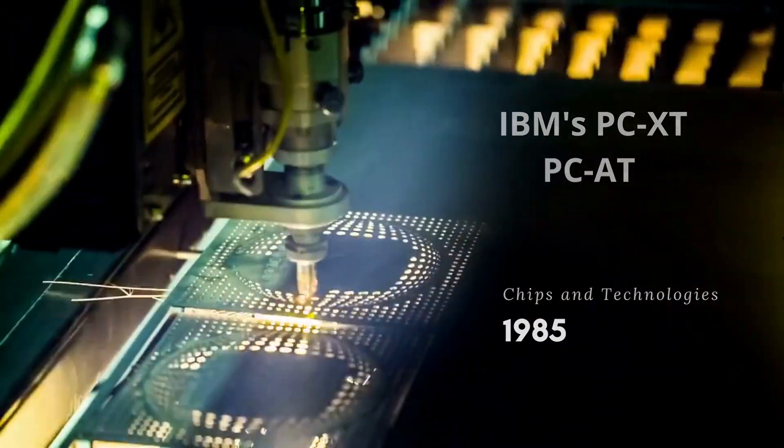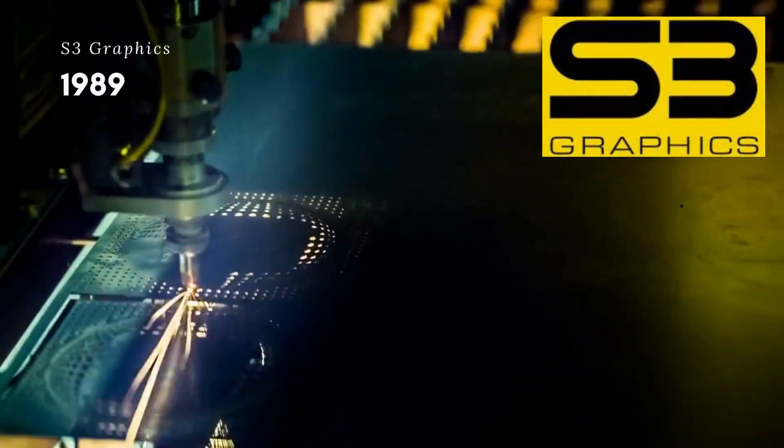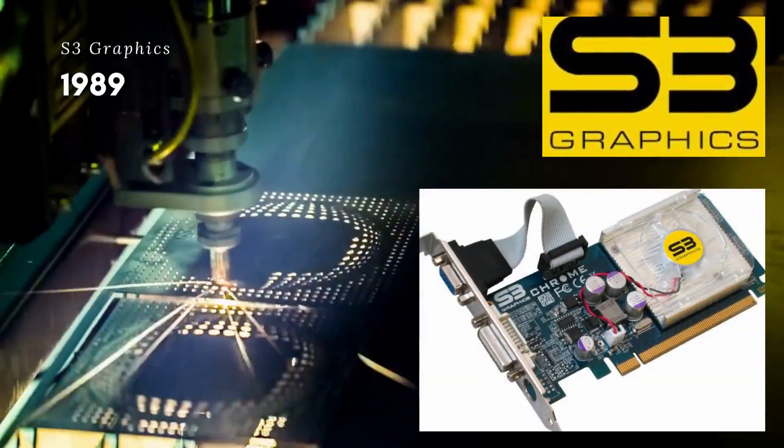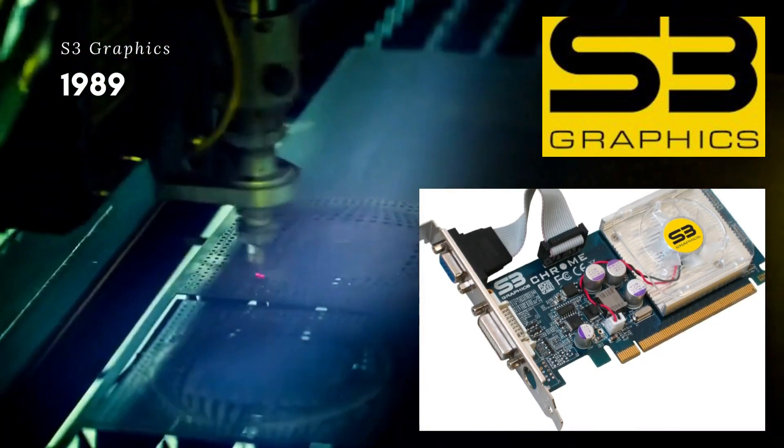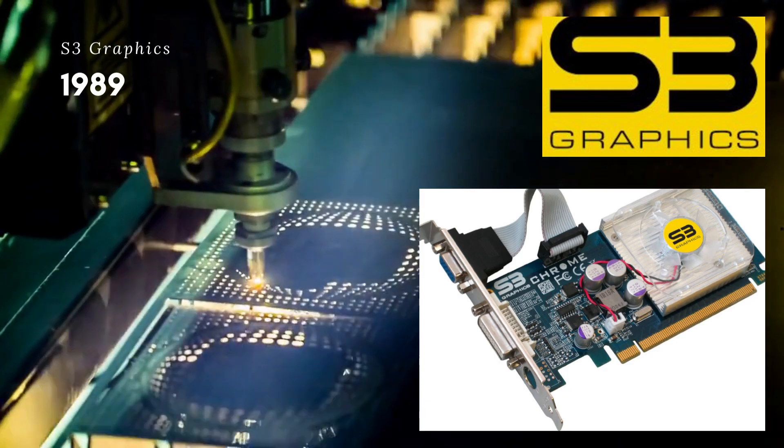In 1989, Banatow launched his third startup company, S3 Graphics, with Yara in Santa Clara, California. S3 focused on enhancing the graphic capabilities in personal computers by using a graphic accelerator chip.